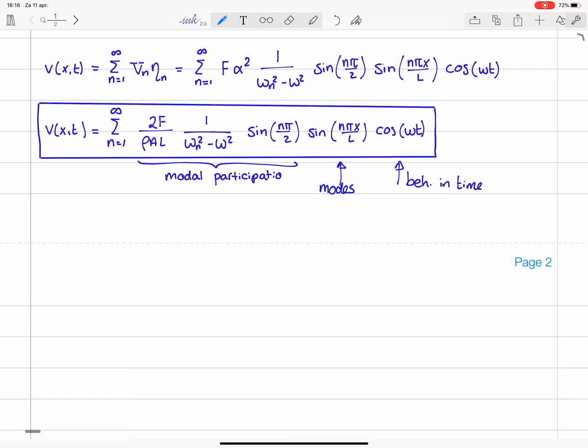and this over here you can interpret it as a modal participation where you can see that only the odd numbered modes contribute and from the fact that we have this ratio you can see that well for a given omega, for a known excitation frequency,